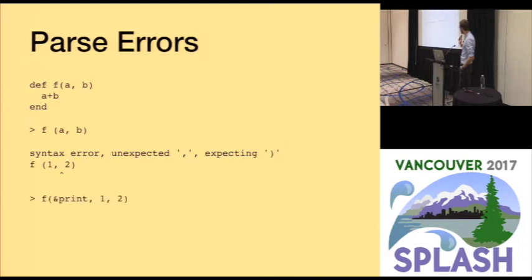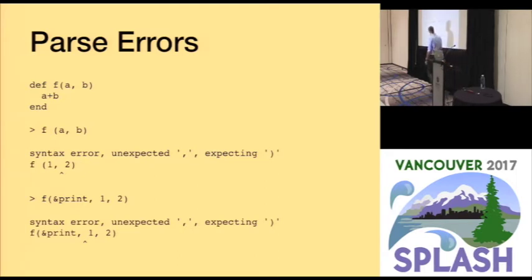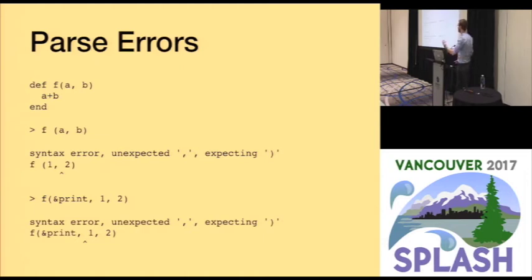Here's a second example — it doesn't work either, and it's actually the same kind of error. Ruby allows any function to take a block, but the block must be the last argument of the function, and this is hard-coded into Ruby's grammar. The parser gets to that point and says it needs a closing parenthesis, which it doesn't find. It would have been better to accept the input and then later say the block needs to be the last argument, not the first.